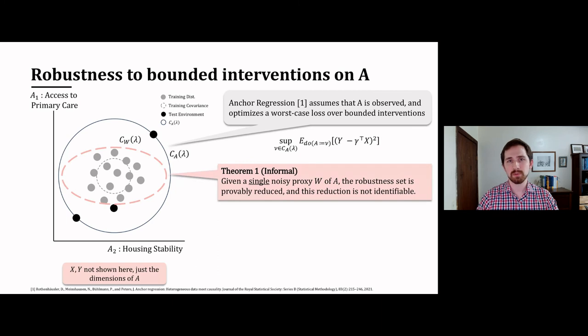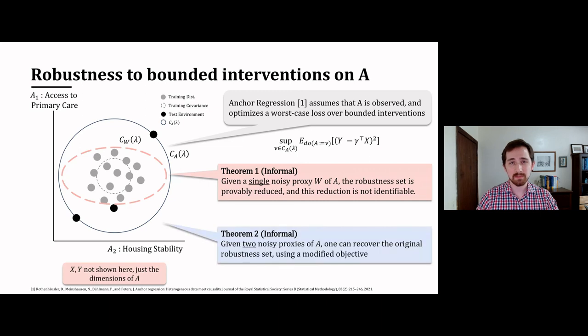We first prove that if only a single noisy proxy is available, then this robustness set is provably reduced and that this reduction is not identifiable from data alone. Second, on a more positive note, we show that if two proxies are available, one can recover the original guarantees with a modified objective.